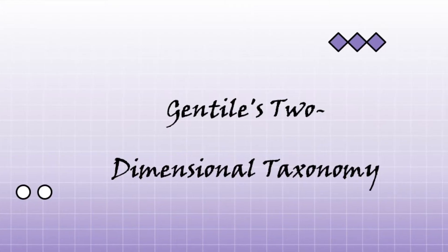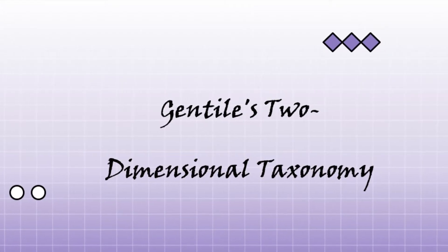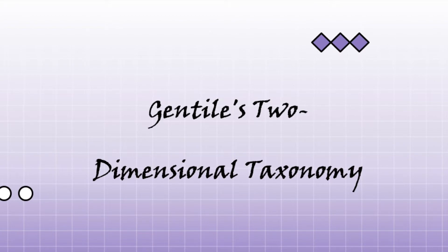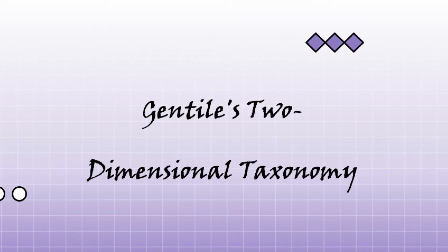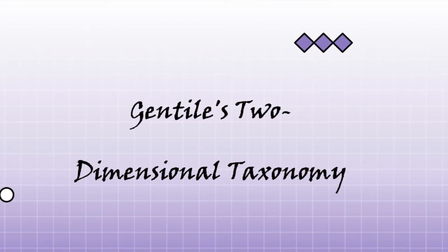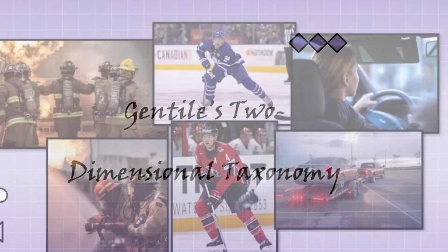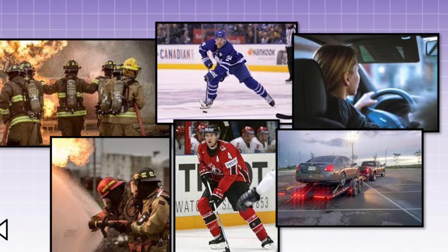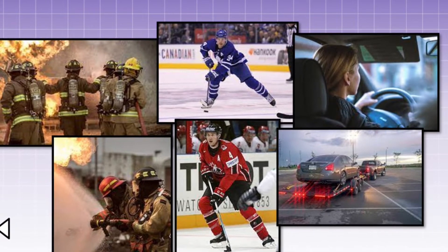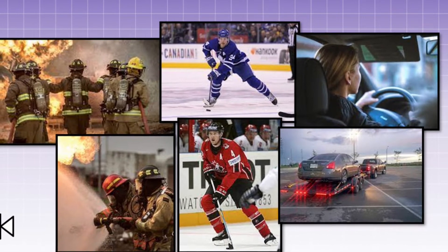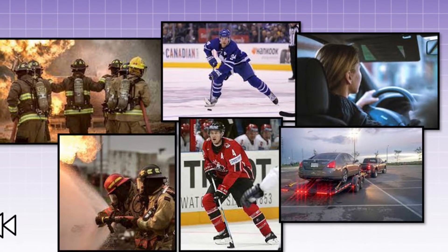Hi, I'm Sonya. Hello everybody, I'm Logan. And we're your motor control experts. Today we will be explaining John Teal's two-dimensional taxonomy in three levels of difficulty through the examples of firefighters for grade five level, hockey players for the grade nine level, and driving for first year university.